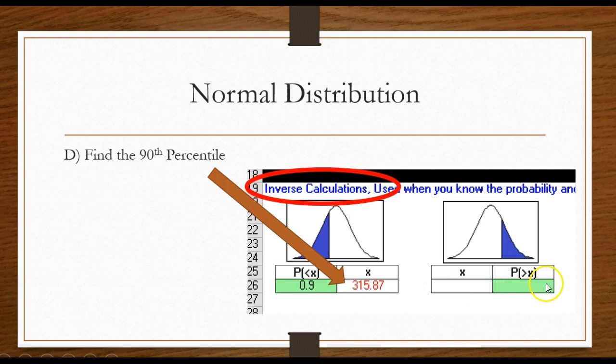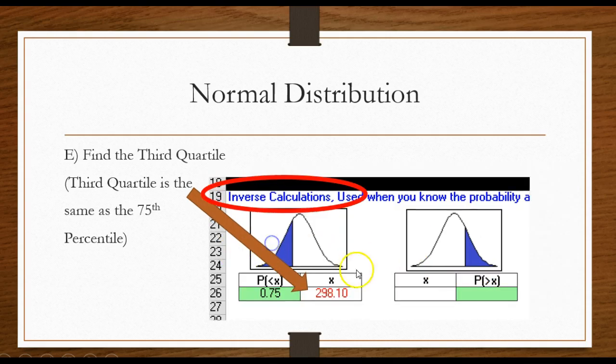Now quartiles, just to understand that the third quartile is the same as the 75th percentile. So the third quartile for this data would be 298.10.